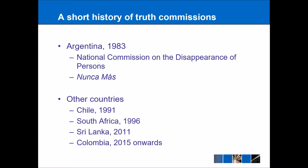A short history of truth commissions: Argentina in 1983 really had the first truth commission as we would know it today, called the National Commission on the Disappearance of Persons. This was a response to the military dictatorship that took over in Argentina and produced the Nunca Más, or Never Again, report that details all of the abuses that occurred during this period, including things like disappearances, kidnappings, and tortures. The Nunca Más report is a bestseller in Argentina and has been constantly in print since it was published in 1984. Other countries have also had truth commissions — Chile, for example, in 1991. Truth commissions are a particular feature of South American transitional justice, with a lot of the examples taking place in South America.